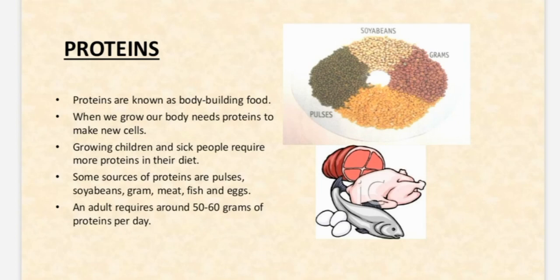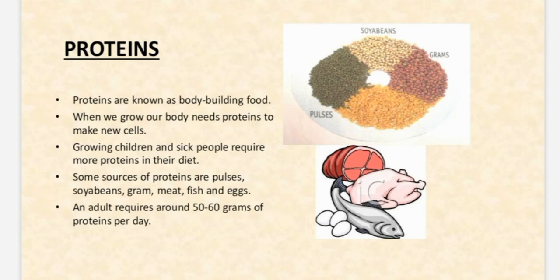Proteins are called body-building food. When we grow, our body needs protein to make new cells. Growing children and sick people require more protein in their diet. Proteins can be obtained from both plants and animals. Protein can be found in pulses, soya bean, and grams, and also in meat, fish, and eggs. The total daily requirement of protein for an adult is around 50 to 60 grams.